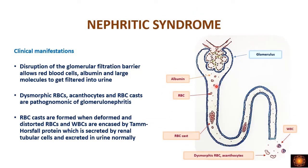In the urine of these patients we see dysmorphic RBCs — RBCs with abnormal shapes — and acanthocytes. The RBCs that are filtered become enmeshed in Tamm-Horsfall protein, which is produced by the renal tubular cells, along with a few leukocytes, forming RBC casts. So the urine contains dysmorphic RBCs, RBC casts, and also albumin that leaks out — causing proteinuria. This explains hematuria and proteinuria in the nephritic syndrome.